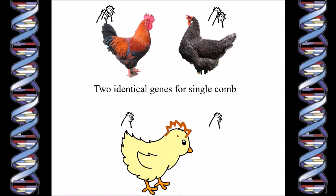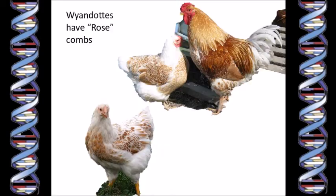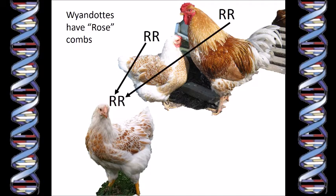When a chicken or a human or any other animal has two identical genes, like two genes for a single comb, we use the word homozygous, which means two genes the same. A purebred leghorn chicken with a single comb is homozygous for the single comb gene. Similarly, a purebred Wyandotte chicken will have inherited one rose comb gene from her mother and one rose comb gene from her father, and so will be homozygous for the rose comb gene.